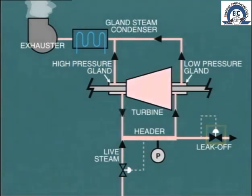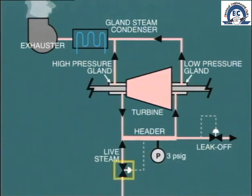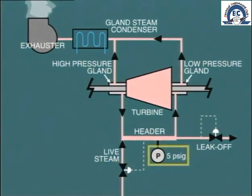When the turbine comes on load, the leak-off steam from the high-pressure gland feeds into the header and so raises its pressure. When the pressure gets to 3 PSI, the live steam supply valve will close. When the pressure rises to 5 PSI, the leak-off valve will open enough to maintain this pressure.